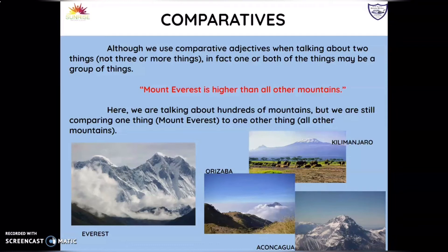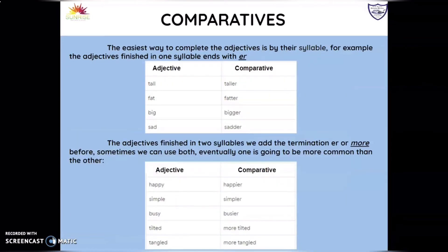Here is the explanation about one and two syllables. The easiest way to form a comparative is based on syllables. If the adjective has one syllable, we add the ending -er: tall → taller, fat → fatter, big → bigger. For adjectives with two syllables, we use either -er or 'more' — both are possible.